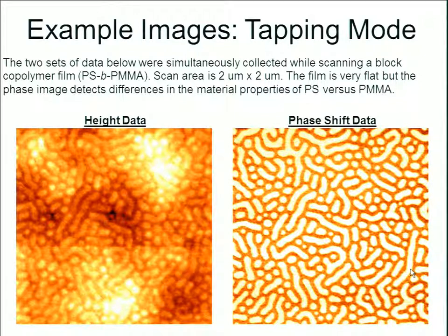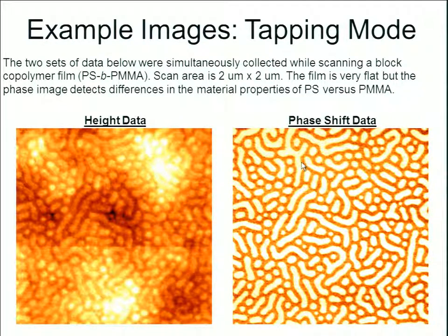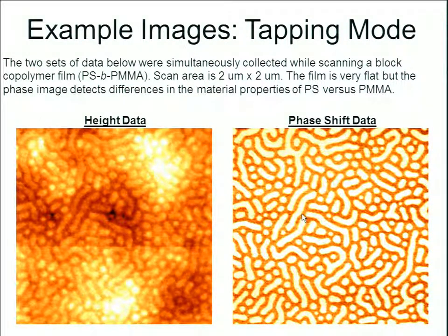On the left is just height data — telling you topography. Whitish areas indicate hills, darker areas indicate valleys, and we see some fuzzy features in the background. But switching over to phase shift data, we're no longer focused on height at all. Instead, we have very clear contrast and higher resolution imaging of the different types of materials present in this relatively flat sample.